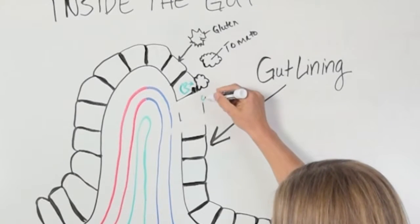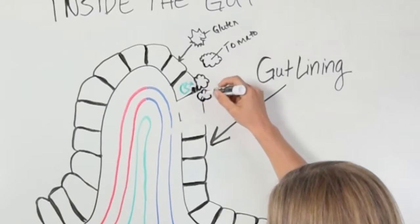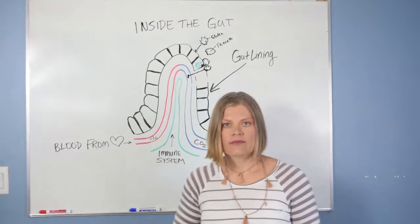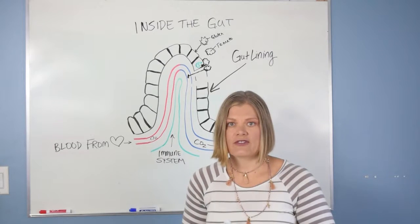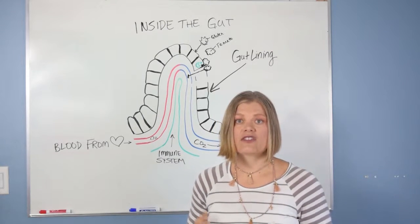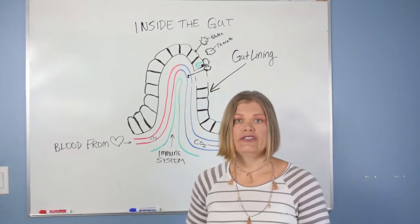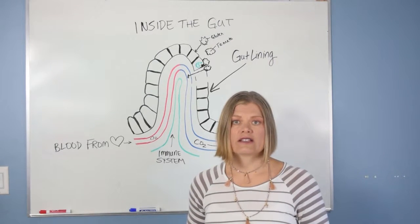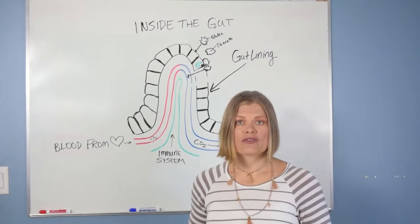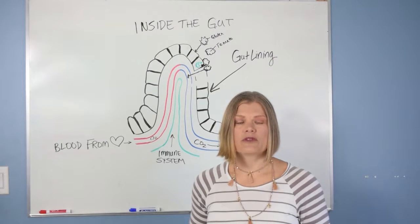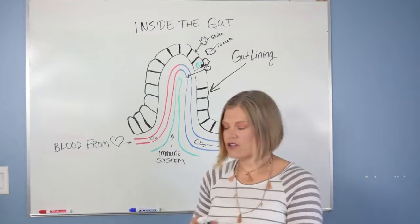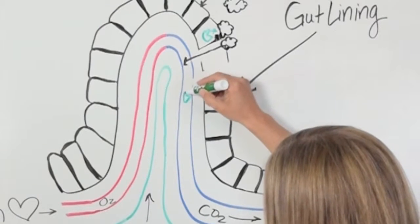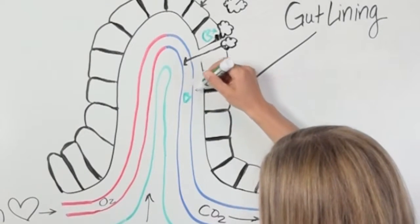Those holes in between the cells allow for molecules to come across — much like this fluffy tomato molecule. It gets across, gets past the cell, gets into the bloodstream. Those molecules shouldn't be in the bloodstream. They should be broken down further into nutrients that we can actually use, like vitamins, minerals, or antioxidants. But in this case, we get a larger molecule across the cells into the bloodstream, and now our Pac-Mans — our immune system — have to figure out what to do.